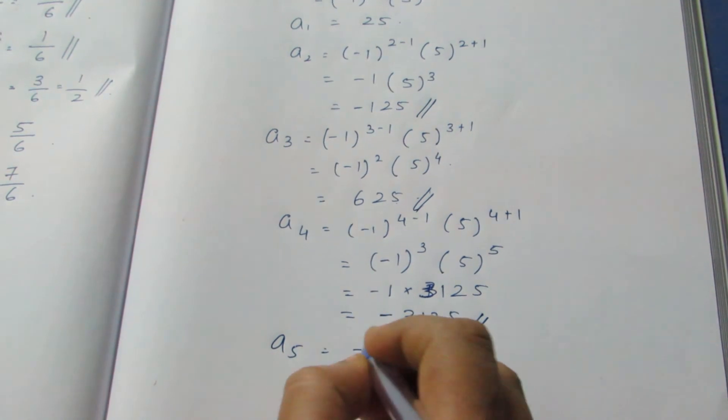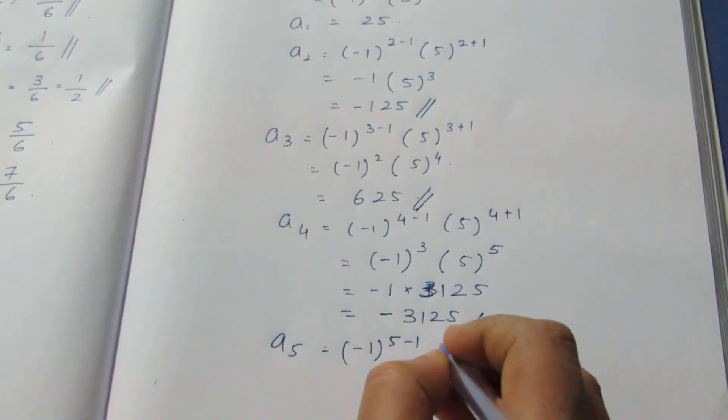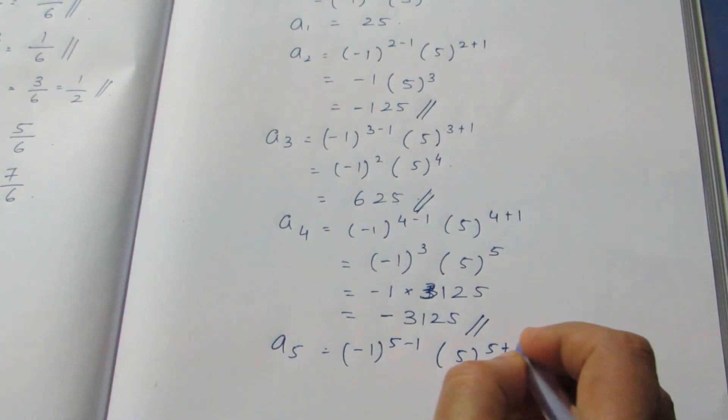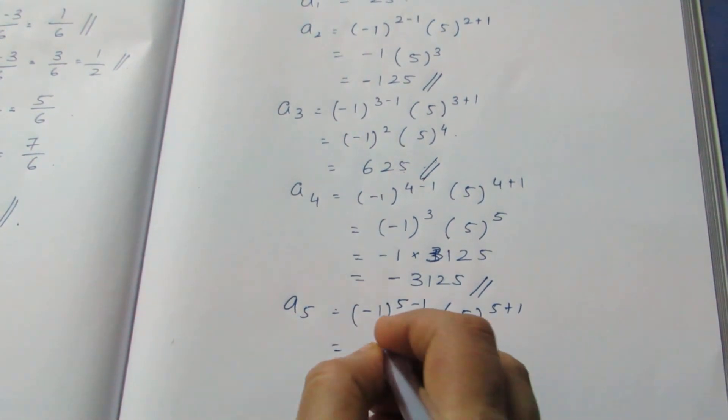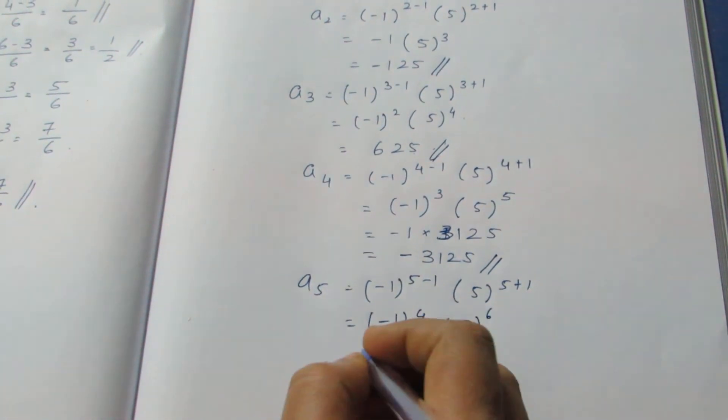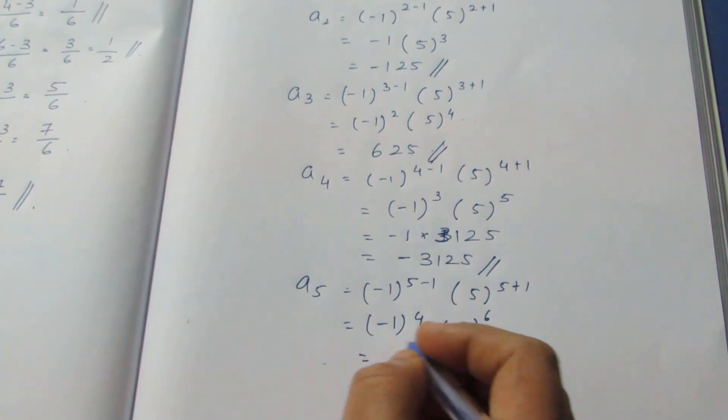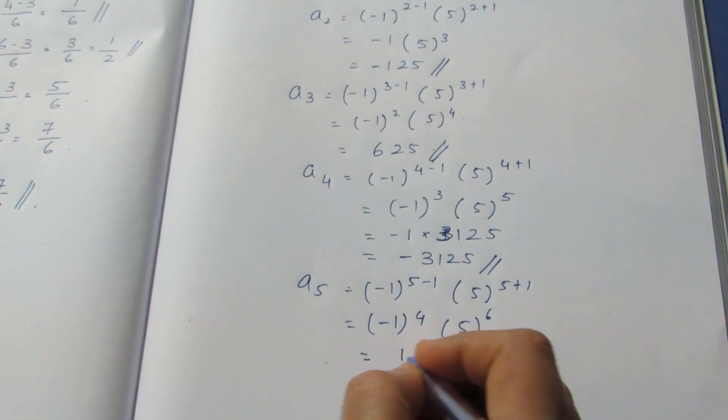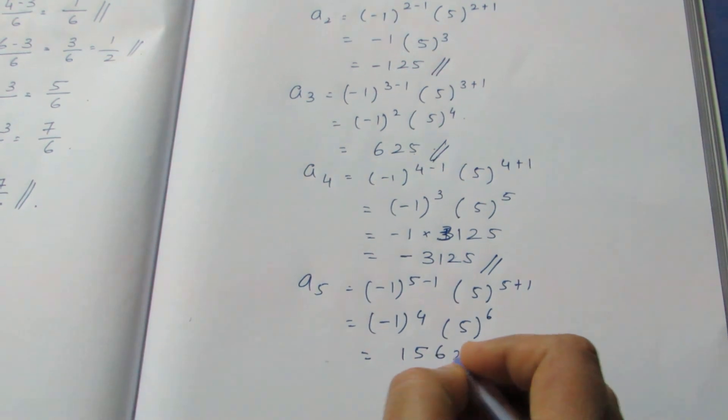Now fifth term: (-1)^(5-1) times 5^(5+1). Here it becomes (-1)^4 times 5^6. This becomes plus 1 and 5^6 is 15625.